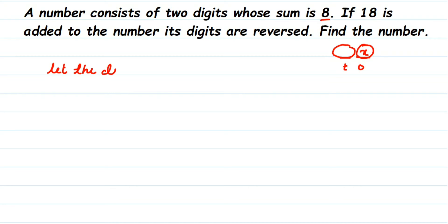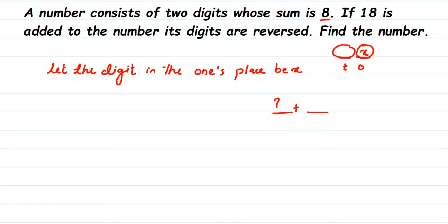Let the digit in the ones place be x. The question states that if we add the two digits, the sum is 8. The digit in the tens place is unknown, so let me call it a question mark. Transposing x to the other side, the tens digit becomes 8 minus x. So the digit in the tens place is 8 minus x.